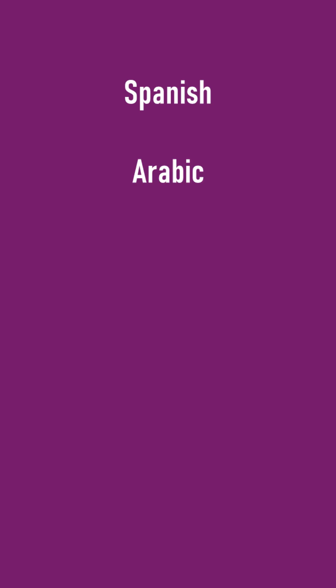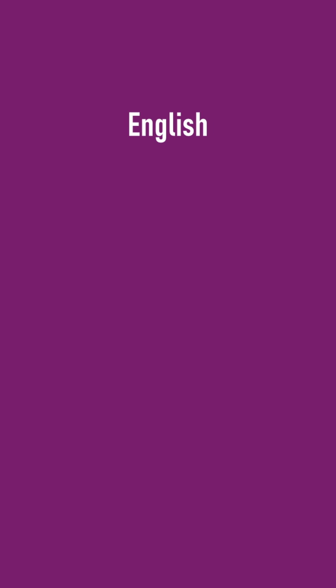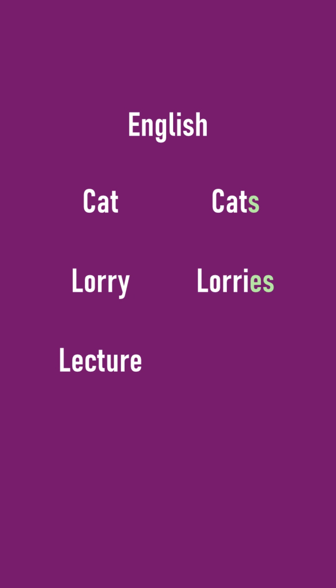Many of the languages you likely know about can change the form of their words to show grammatical information. Even English does this to an extent. We can add an S to words like cat, lorry, or lecture to show that we're talking about more than one of these — cats, lorries, and lectures.